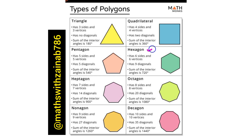The next one is a hexagon, which has six sides and six vertices, nine diagonals, and the sum of the interior angles is 720 degrees. Next is a heptagon, which has seven sides and seven vertices, 14 diagonals, and the sum of the interior angles is 900 degrees.